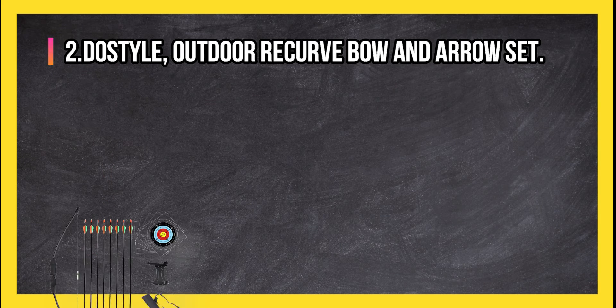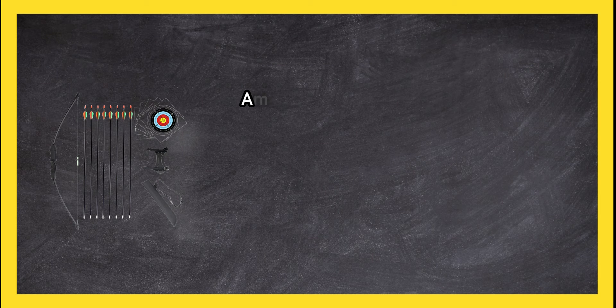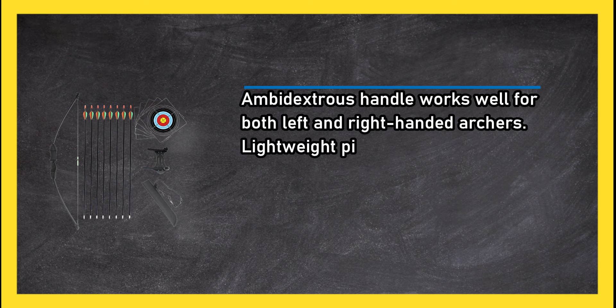At number 2, Dostyle Outdoor Recurve Bow and Arrow Set. Ambidextrous handle works well for both left and right handed archers. Lightweight pick, so it doesn't require too much strength to shoot.